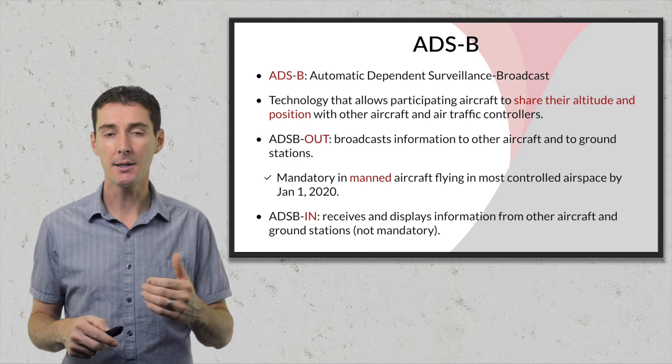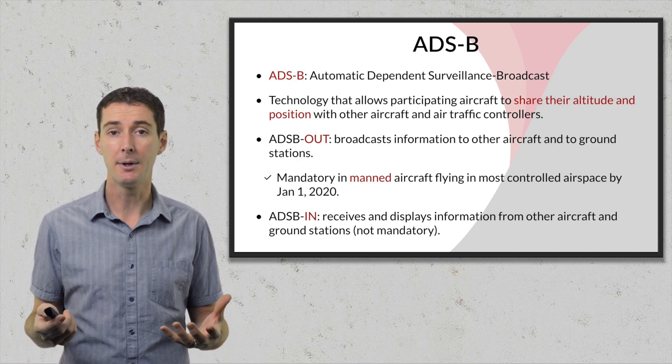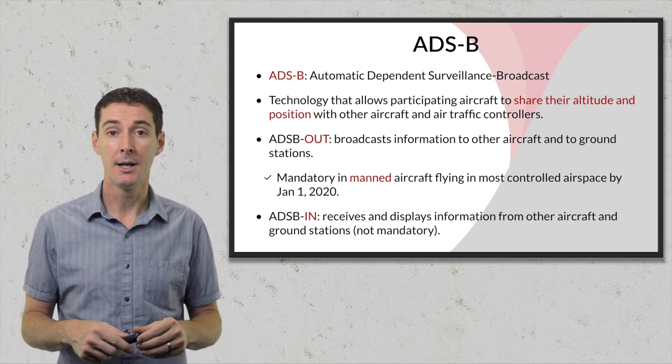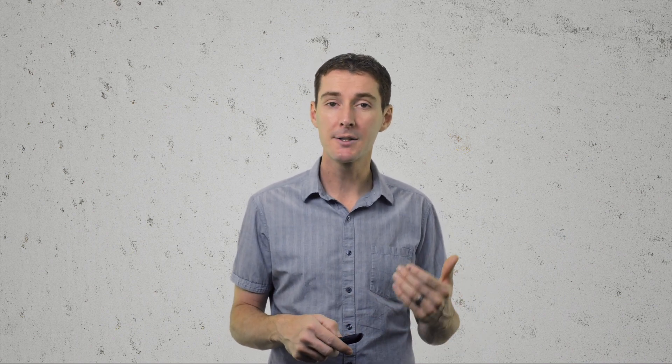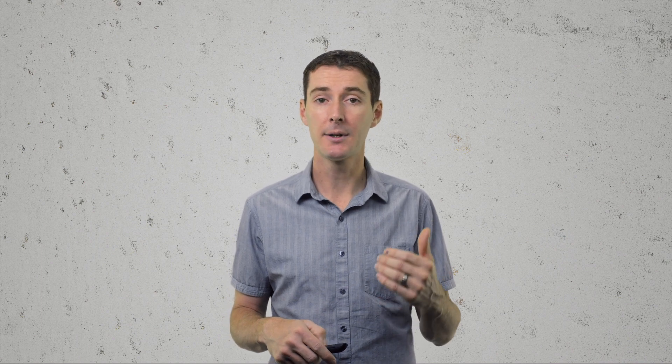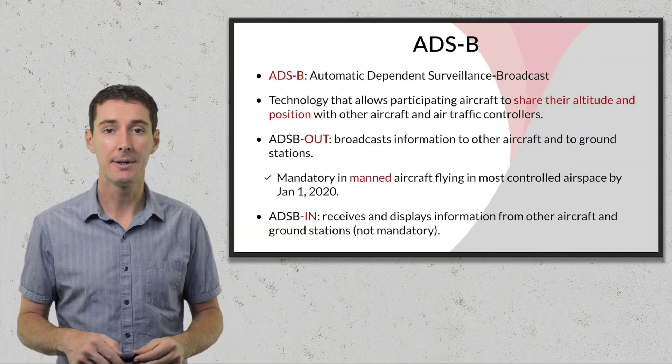ADSB In is not mandatory as of 2020 — you only need to be able to broadcast the information. The reason it's not mandatory is because it requires an additional display or device on board the airplane. Newer airplanes can provide that capability, but older airplanes cannot without adding equipment. So the FAA only made ADSB Out mandatory by 2020.